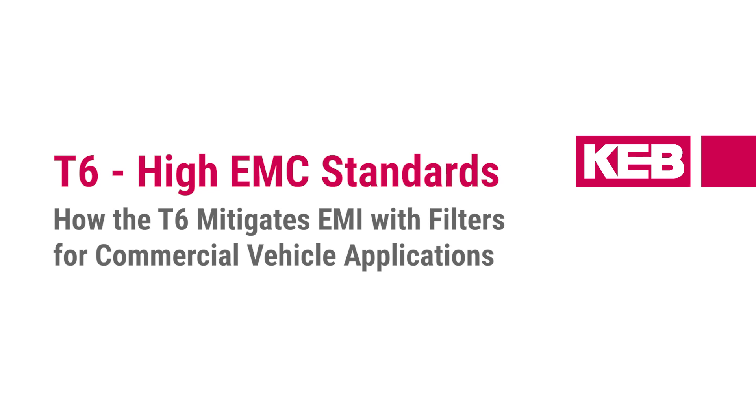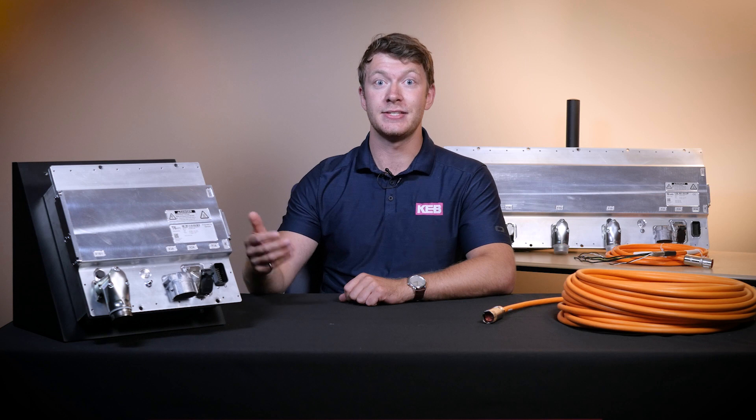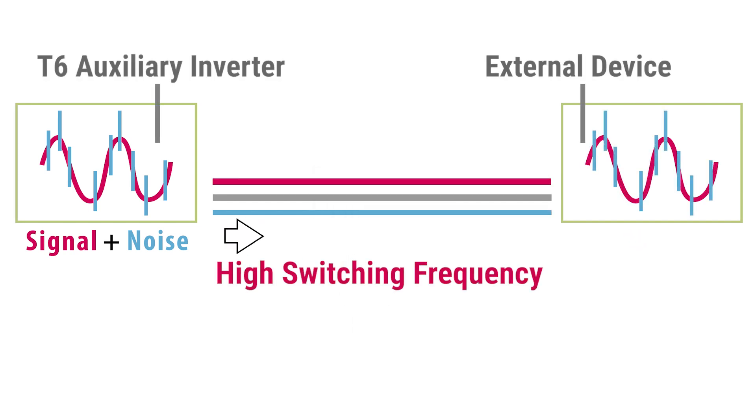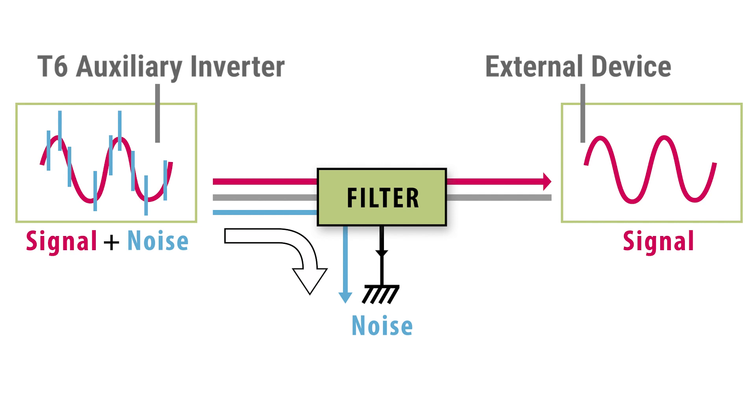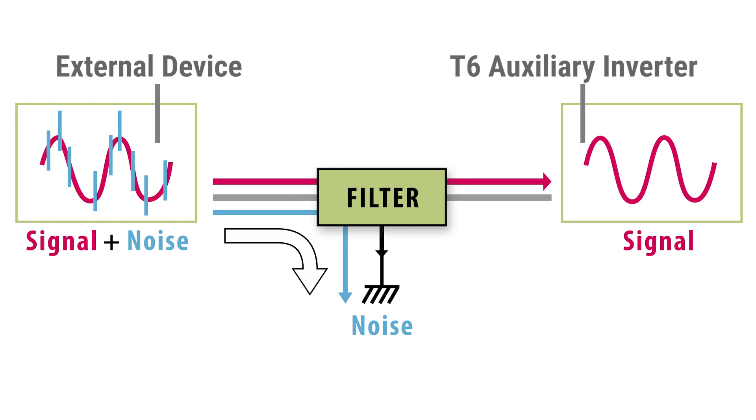The T6 addresses EMC with various strategies. The first of these is integrated DC EMC filters. These filters are designed to mitigate conductive emissions. They protect external devices from the high switching frequencies within the inverter, making sure those aren't conducted out, and the T6 uses those filters to prevent external noise from coming into the inverter.